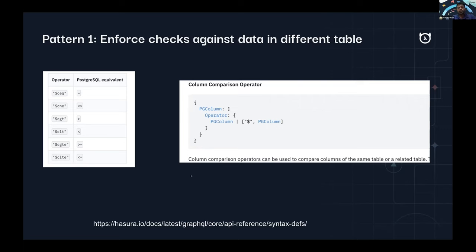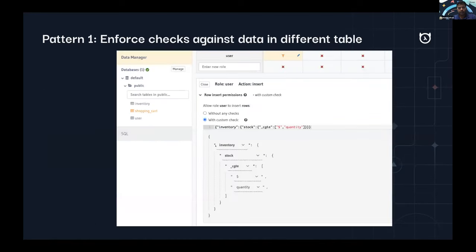To give you an example, we're going to build a shopping cart and model what permissions it should have. A shopping cart is basically some place where you can add a few items, and those items are only valid if they are present in the inventory. So here I have two tables: shopping cart and inventory. Shopping cart has a relationship with inventory.